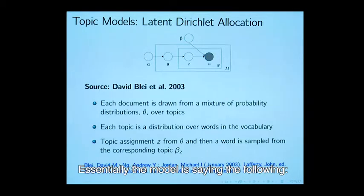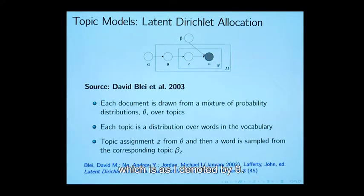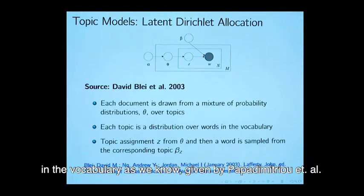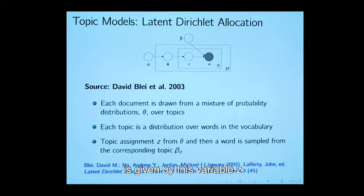Essentially the model is saying the following: each document is drawn from a mixture of probability distributions, which is as denoted by theta. Each topic is essentially a distribution over words in the vocabulary. And then the topic assignment to a particular word is given by this variable z. And then a word is sampled from the corresponding topic beta indexed z. That is essentially the model.